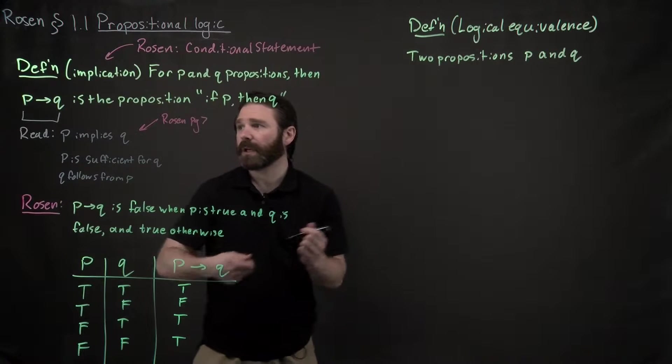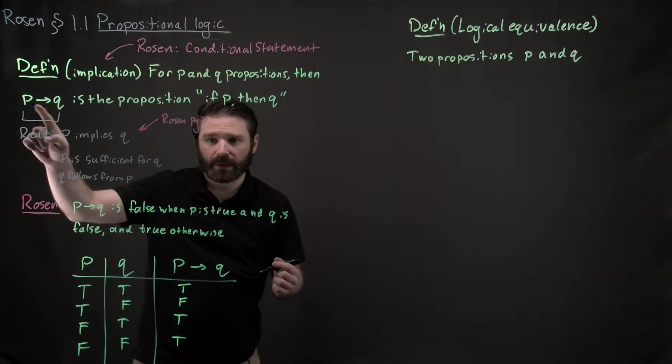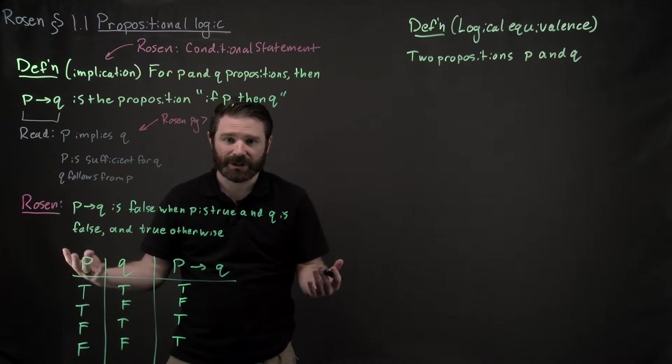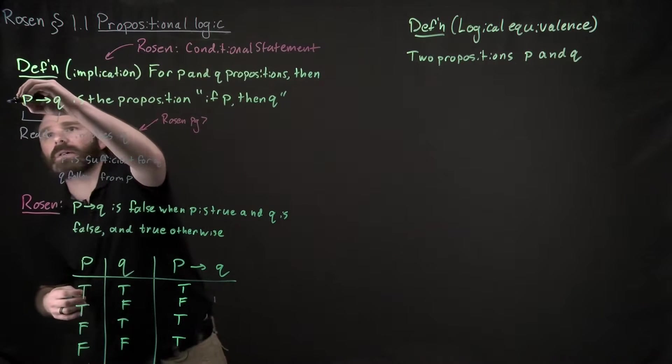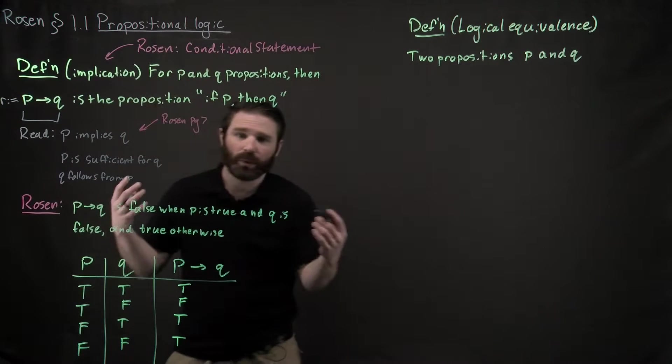So for example, over here, this P implies Q, that indeed is a compound proposition. So if we wanted to, we could assign a variable to it and we could call this thing R if we wanted to.